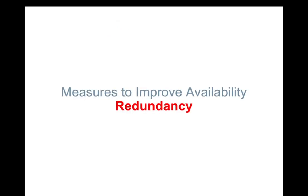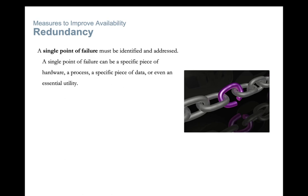The next very important part in the measures to improve availability — to achieve five nines, that 99.999% availability — is redundancy. In redundancy, we look at single points of failure. A single point of failure is a critical operation within the organization where other operations may rely on it, and failure halts this critical operation.